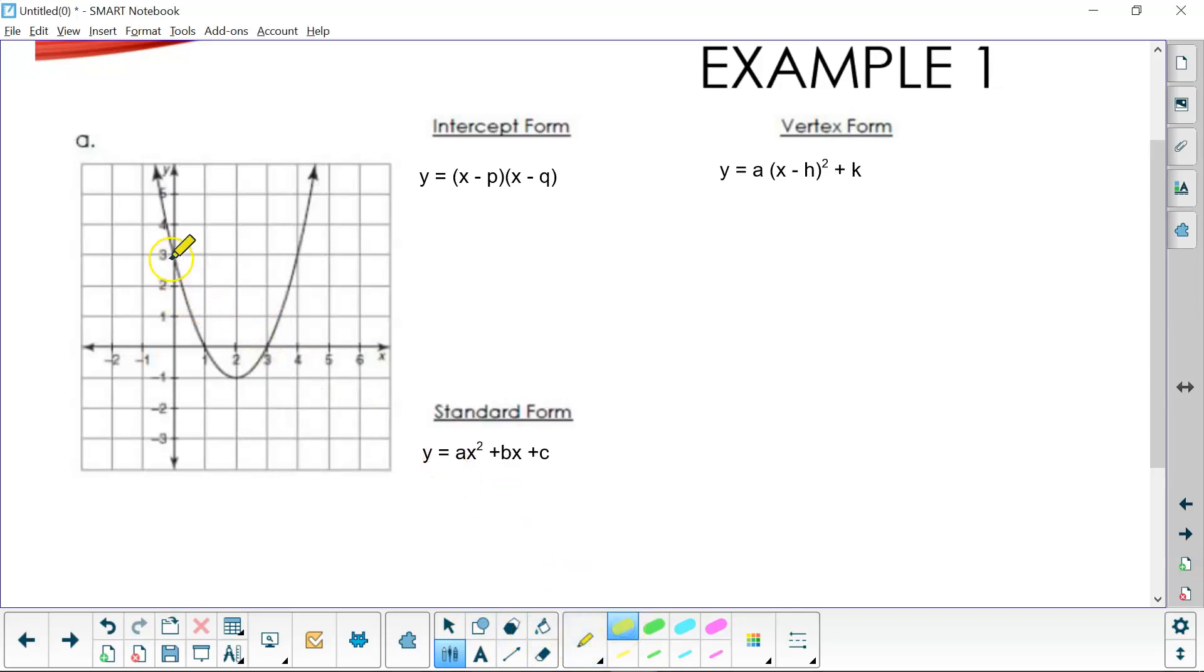Right here we've got the intercept form. Let's put that in blue. We've got this point where the graph crosses the x-axis, and this point where the graph crosses the x-axis. And that's what we're going to see in our intercept form. These are our zeros or our roots or our solutions, if you will.